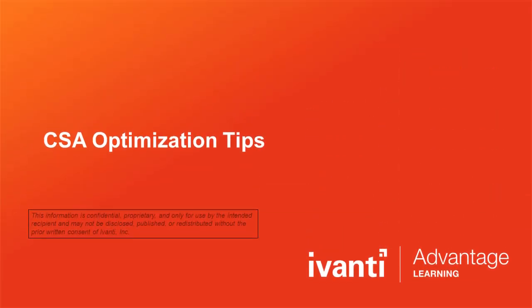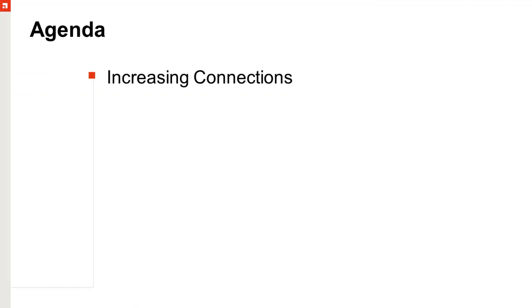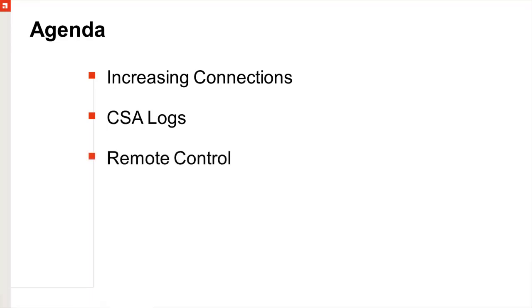Welcome everyone. Today we are going to be talking about the cloud service appliance and some best tricks to help you with improving and optimizing traffic. My name is Mark Vilos, I'm the product support engineer over the cloud CSA. Topics we'll be discussing include increasing connections, making sure logs are properly rolling so they don't fill up your OS, handling remote control communication, and the difference between the physical and virtual CSA.